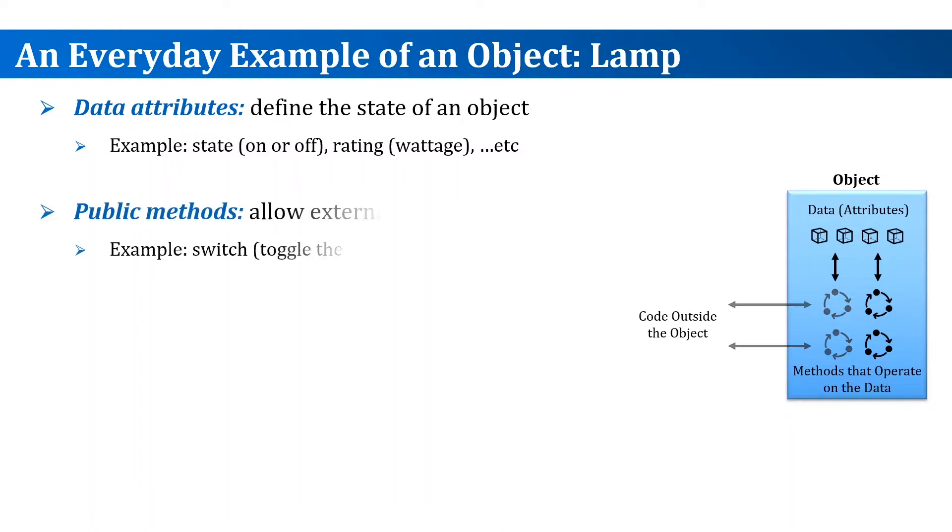Public methods are methods that the external code will deal with. If we want to interact with the lamp object, it could be a switch that toggles the state attribute of the lamp, or code that reads the wattage of the lamp to calculate electricity consumption. Public methods are useful and needed because they are the port through which the object interacts with the external world.